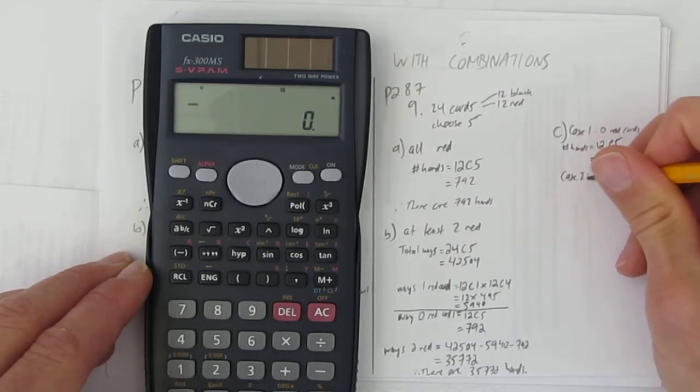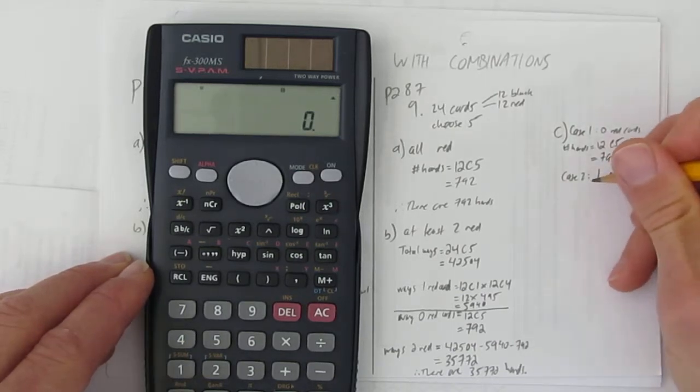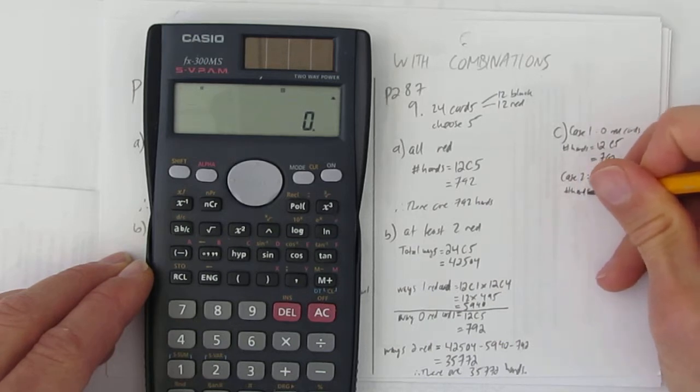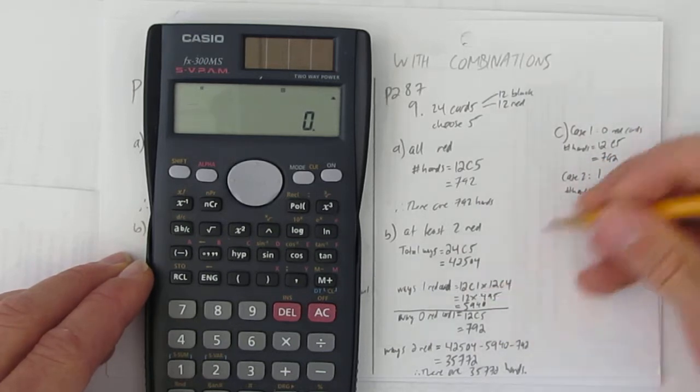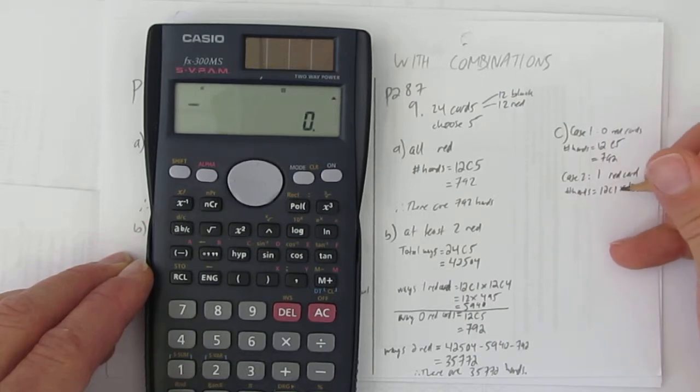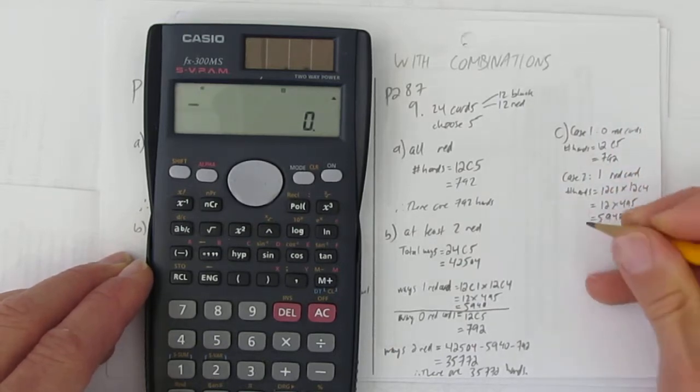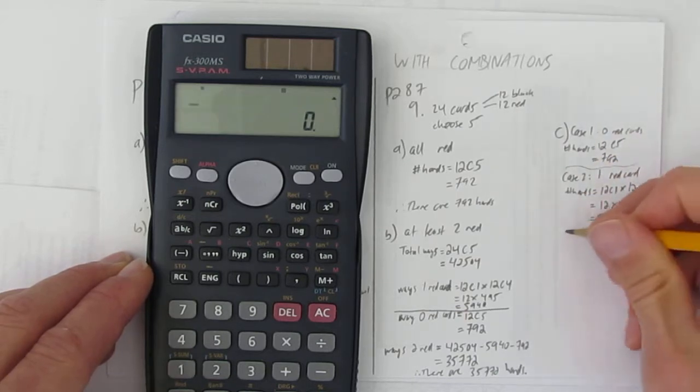Case two, you could have one red card. And we already calculated that as well, but we'll show our work again. Number of hands where you have one red card is 12 choose one times 12 choose four. That is one red card and four black cards, which is 12 times 495, which is 5940. Put a little line there if that helps.